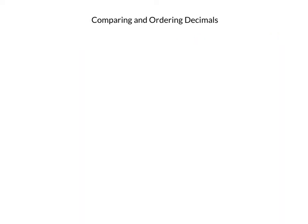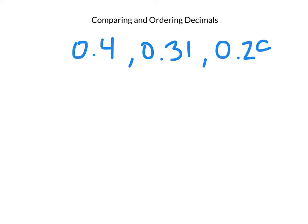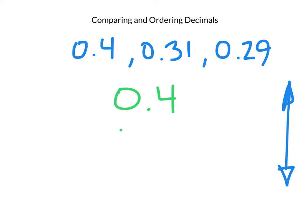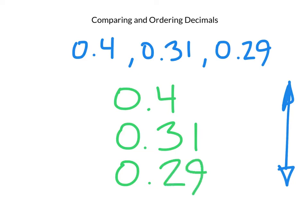Let's do another example. Here are three decimals we want to compare: 0.4, 0.31, and 0.29. Remember, the first thing I need to do is line up the decimals and rewrite my numbers vertically — meaning up and down. So: 0.4, 0.31, 0.29. Now that I have them written vertically and my decimals lined up, it's easy to compare.